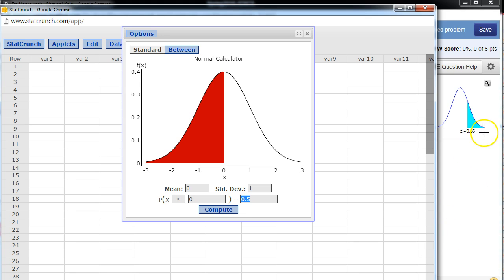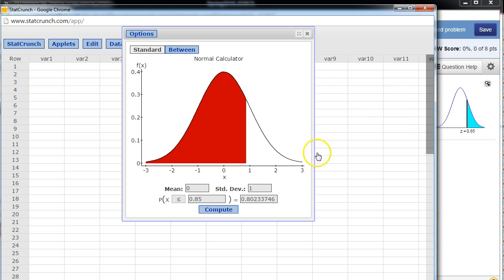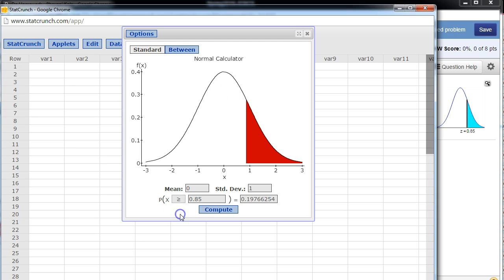Now the problem is asking us to find the area to the right-hand side of Z which is 0.85. So I want the area to the right. The cool thing here is I'm just going to plug Z as 0.85 and I'm going to click Compute. You see the graphs don't match. Here I get the area to the left, but here I want the area to the right. So what you're going to do is simply go ahead and change your icon from less than to greater than, and voila, your areas match.